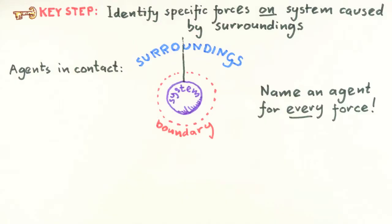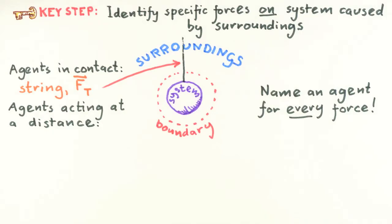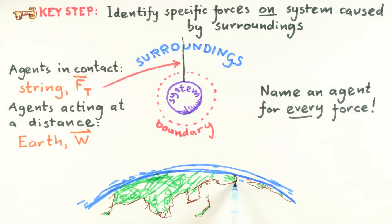In this example, there is only one agent that crosses the boundary, the string. So we identify here the tension force on our system is due to the string as the specific agent. We can then look for agents in the surroundings that can exert forces that don't require contact, action at a distance forces. In this course so far, we have only two possible candidates, either gravitational or electric forces. Here, we know that the Earth is the only agent that can exert an action at a distance force on our hanging object. In this case, the weight force, which is the gravitational force on the object due to the Earth as the specific agent.